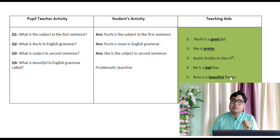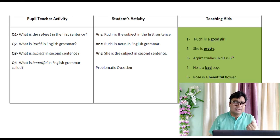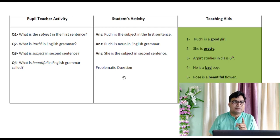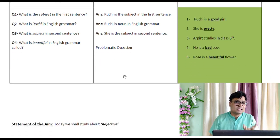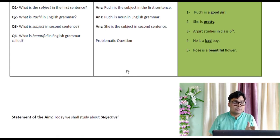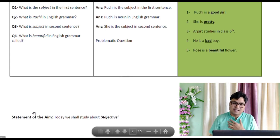Students have answered about noun, pronoun, subject, and predicate because they already know these concepts. But when asked about 'beautiful,' they will be confused — it will be a problematic question for them. Sharp students might answer that it is an adjective; others won't know. From here onwards, you start your statement of aim: 'Students, today we shall study about adjective.'